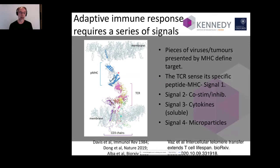The system has a huge challenge: it not only needs to recognize something foreign, it has to distinguish a genuine threat from harmless things like food and environmental antigens. One way to think about this is that antigen recognition is just the first signal. The antigen-presenting cell also provides additional co-stimulatory signals — cell surface proteins whose expression and biophysical properties serve as a second clue to the T-cell as to whether this is a threat.